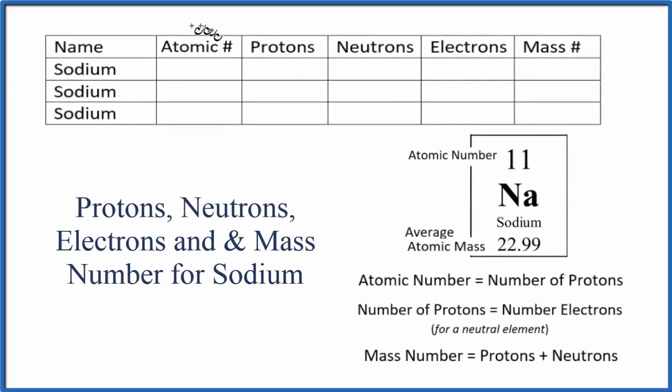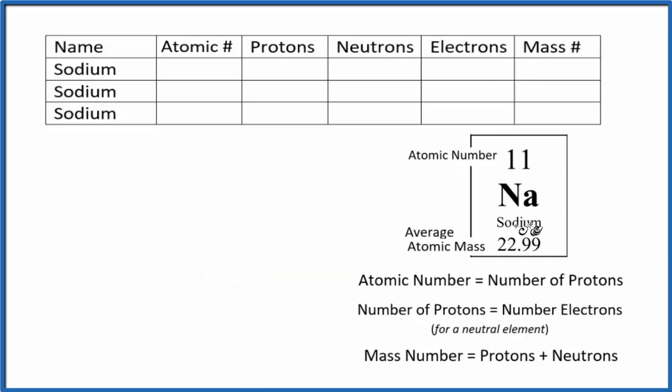In this video, we'll look at the number of protons, neutrons, and electrons, and the mass number for sodium. So sodium has a number of different isotopes. It really has one main isotope, but there are two other minor trace isotopes. We'll talk more about those later. Let's complete our table.